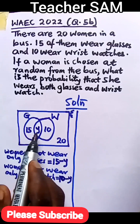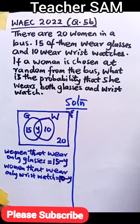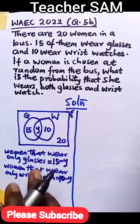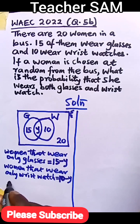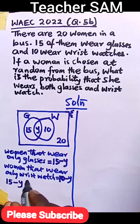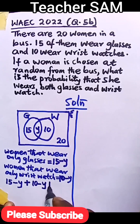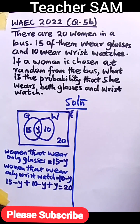Why are we saying minus Y? Because 10 wears wristwatch, which includes both those that wear wristwatch only and those that wear wristwatch and glasses. So those that wear only glasses: 15 minus Y. Those that wear only wristwatch: 10 minus Y. Now let's sum everything. The summation will be those that wear only glasses, 15 minus Y, plus those that wear only wristwatch, 10 minus Y, plus those that wear both, Y. Everything equals the total number of women, which is 20.